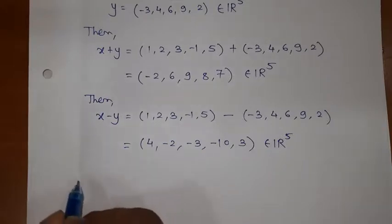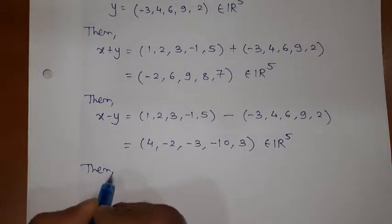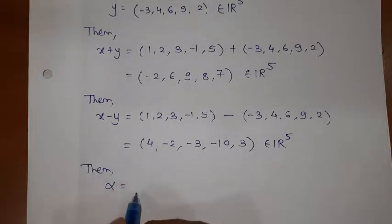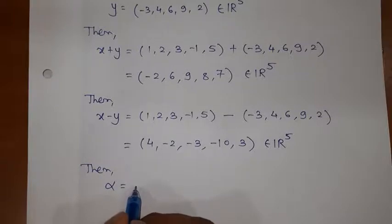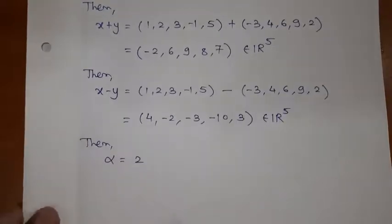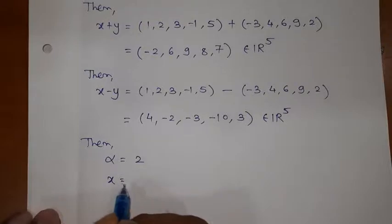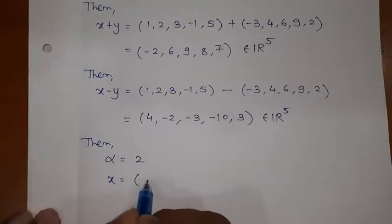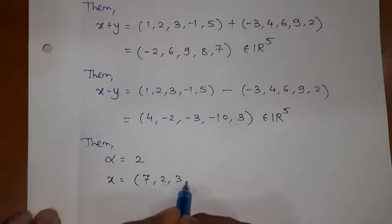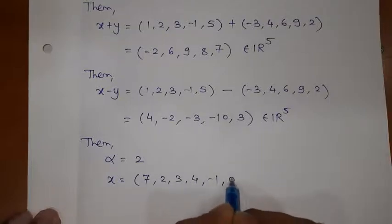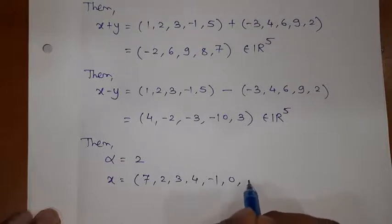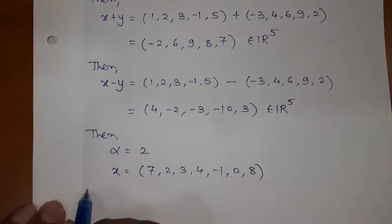The last is scalar multiplication. We are taking any element, alpha equals any constant. I'll take 2. And I am taking X, which is an element of R^7. Tell me some digits: 1, 2, 3, 4, -1, 0 also you can take. How many? Six we have written, I will add one more: 8.